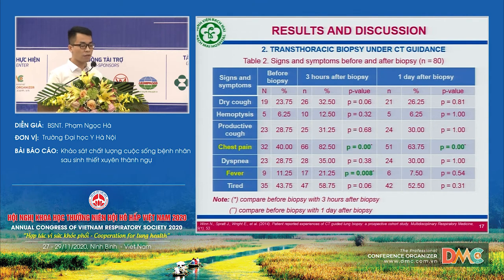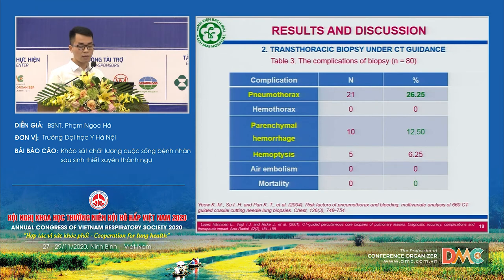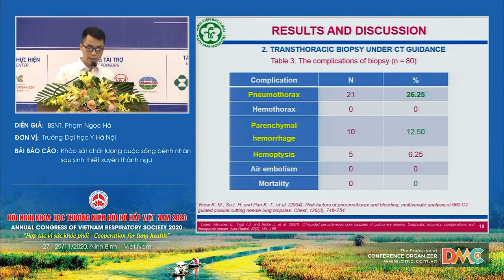Moving to TTB results, chest pain and fever increased significantly at three hours post-biopsy compared to before biopsy. After one day, chest pain decreased but was still significantly higher than before biopsy. After the intervention, the most common complication was pneumothorax at 26.3%. Over half of patients did not have any complications and there were no cases of death. According to one study, the rate of pneumothorax was 15%; if a patient developed pneumothorax, the procedure was stopped and oxygen was supplied.